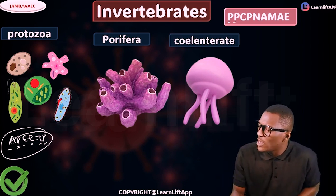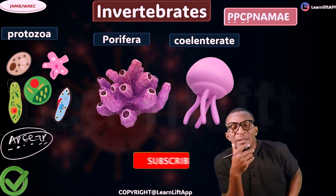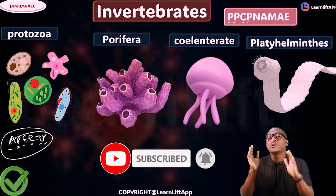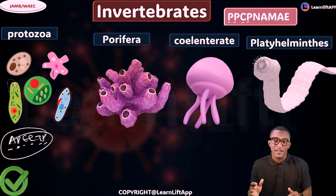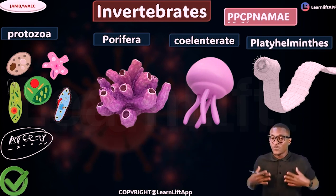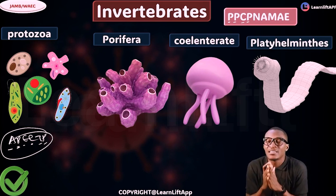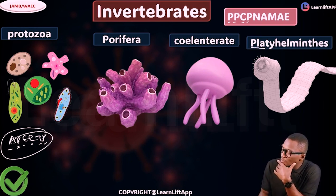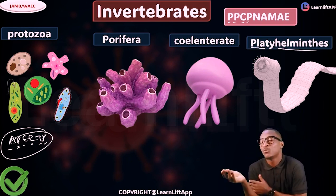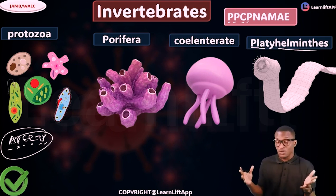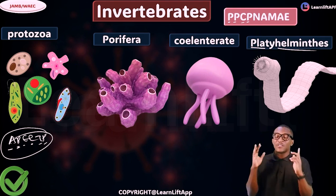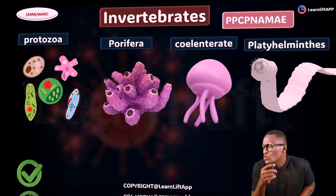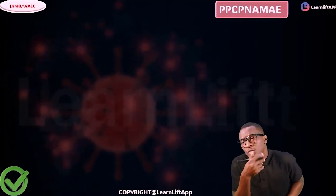The next phylum is Platyhelminthes — the flatworms. 'Platy' means flat, 'helminthes' means worm, so they are called flatworms. Anytime you see a worm that is slim — no visible front or back thickness — that is a Platyhelminthes, because 'platy' is flat and 'helminthes' means worm. So they are called flat worms.